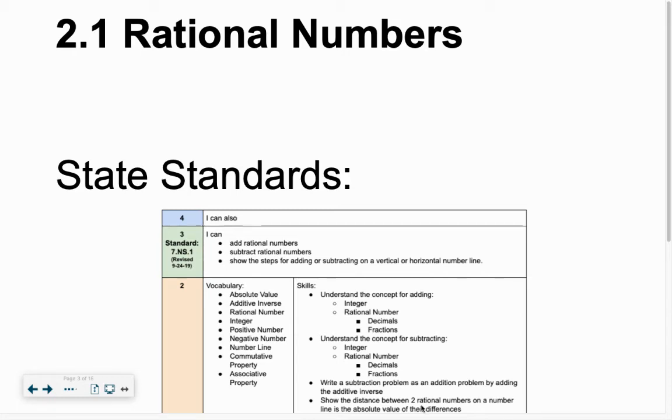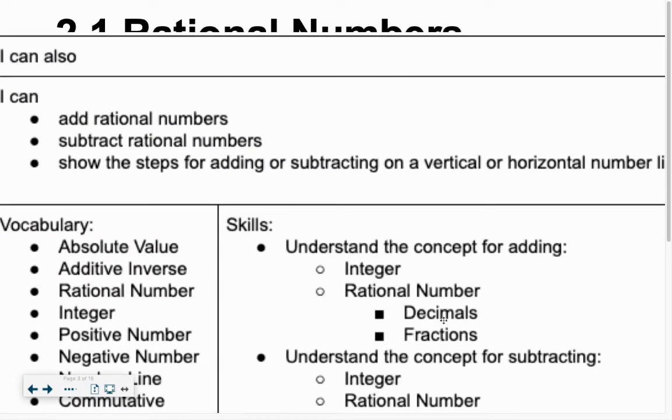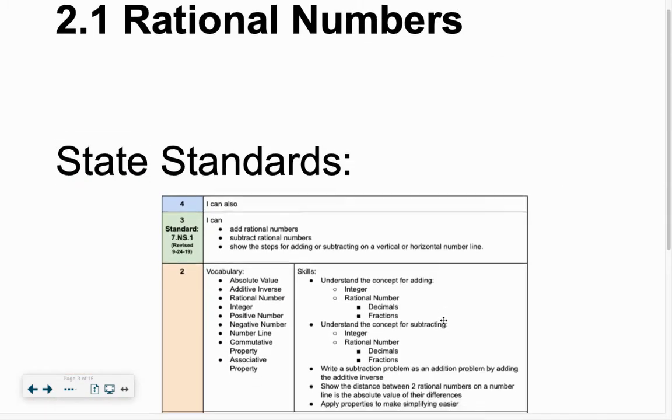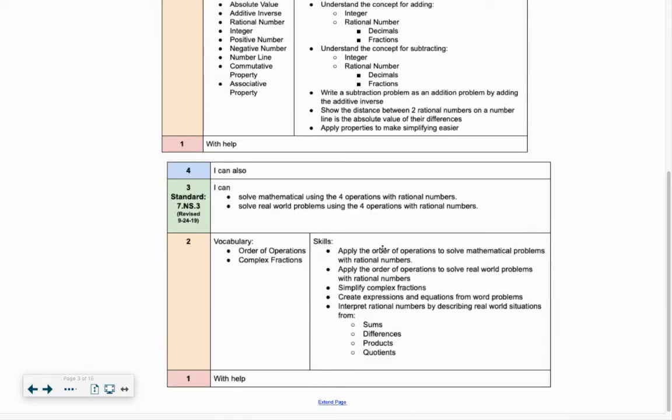Chapter 2, Lesson 1, Rational Numbers. Today we're seeing that we have the same standard we had before with 7.NS1, Add and Subtract Rational Numbers. In this chapter we'll have 7.NS2 as well, and today we've got 7.NS3, Solving Mathematical Problems Using the Four Operations.